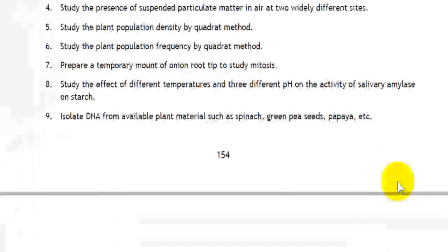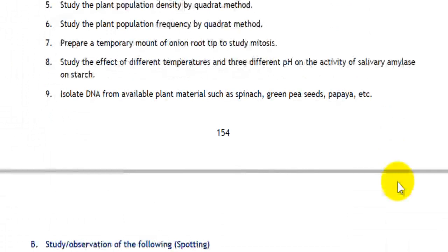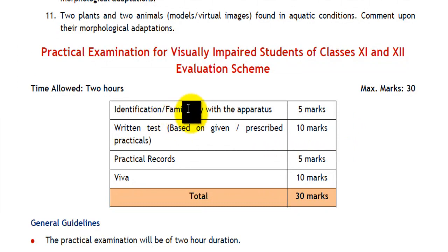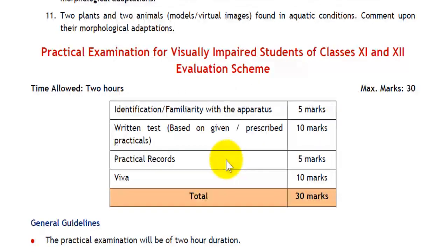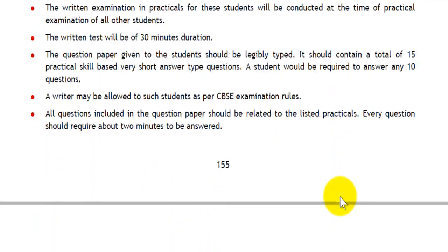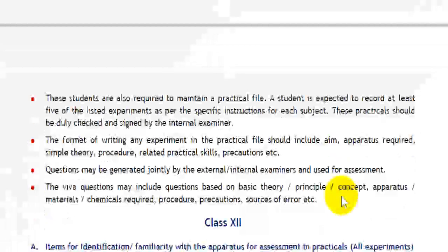Here you can see the list of experiments and you can also study it on the official website of the CBSE. These are some instructions for the visually impaired students' practicals. Identification or familiarity with the apparatus is of 5 marks, the written test based on the given practicals is of 10 marks, the practical records carry 5 marks, and the VIVA is also of 10 marks, totalling to 30 marks. These guidelines can also be viewed here and could be of importance for you.